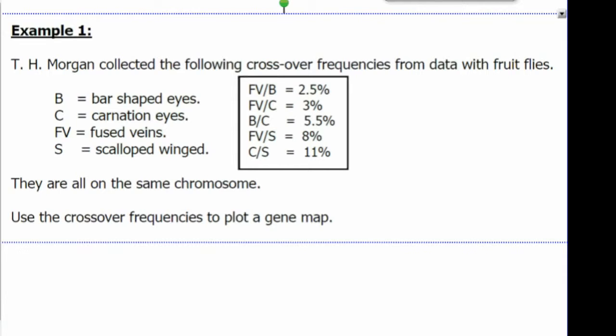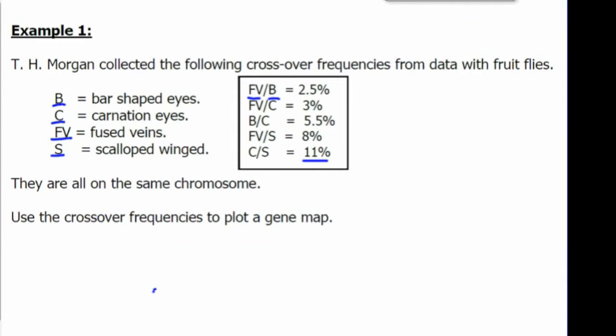Let's take a look at some genes. We have B is bar-shaped eyes, C is carnation eyes, FV is fused wings, and S is scalloped wings. So the distance between FV and B is 2.5%. Let's start with the largest number, which is 11%. So the distance between C and S genes is 11. Let's put C at 0 and S at 11.